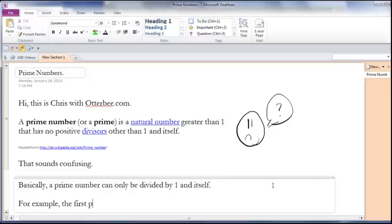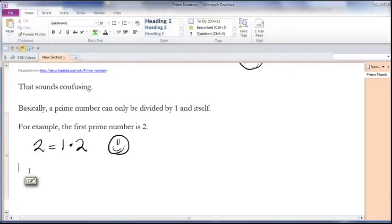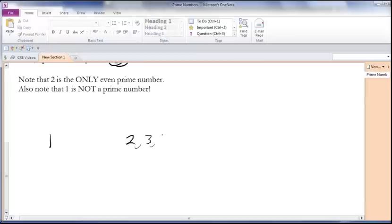For example, the first prime number is 2. 2 equals 1 times 2, and 2 cannot be divided evenly by anything else. Note that 2 is the only even prime number. Also note that 1 is not a prime number.